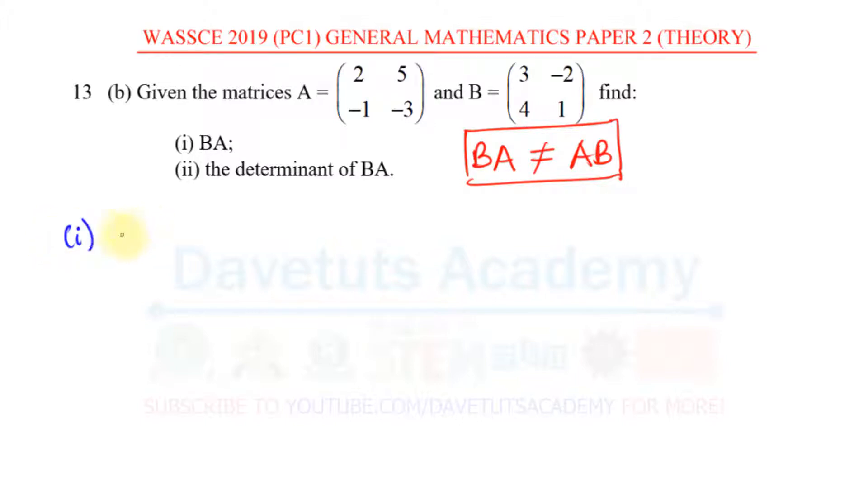So let's go ahead and find the solution to what we are asked here. In the first instance, we are asked to find BA. BA is going to be the product of 3, minus 2, 4, 1 and 2, 5, minus 1, minus 3.